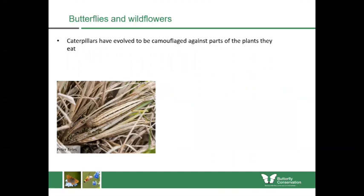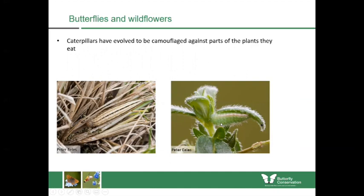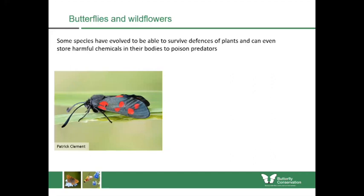Butterflies have also evolved to camouflage themselves against certain plants. This is a caterpillar of the grayling butterfly — you can see how well camouflaged it is against the grass it's eating. The northern brown argus caterpillar has evolved to be green and hairy, just like the green hairy appearance of the leaf it feeds upon.